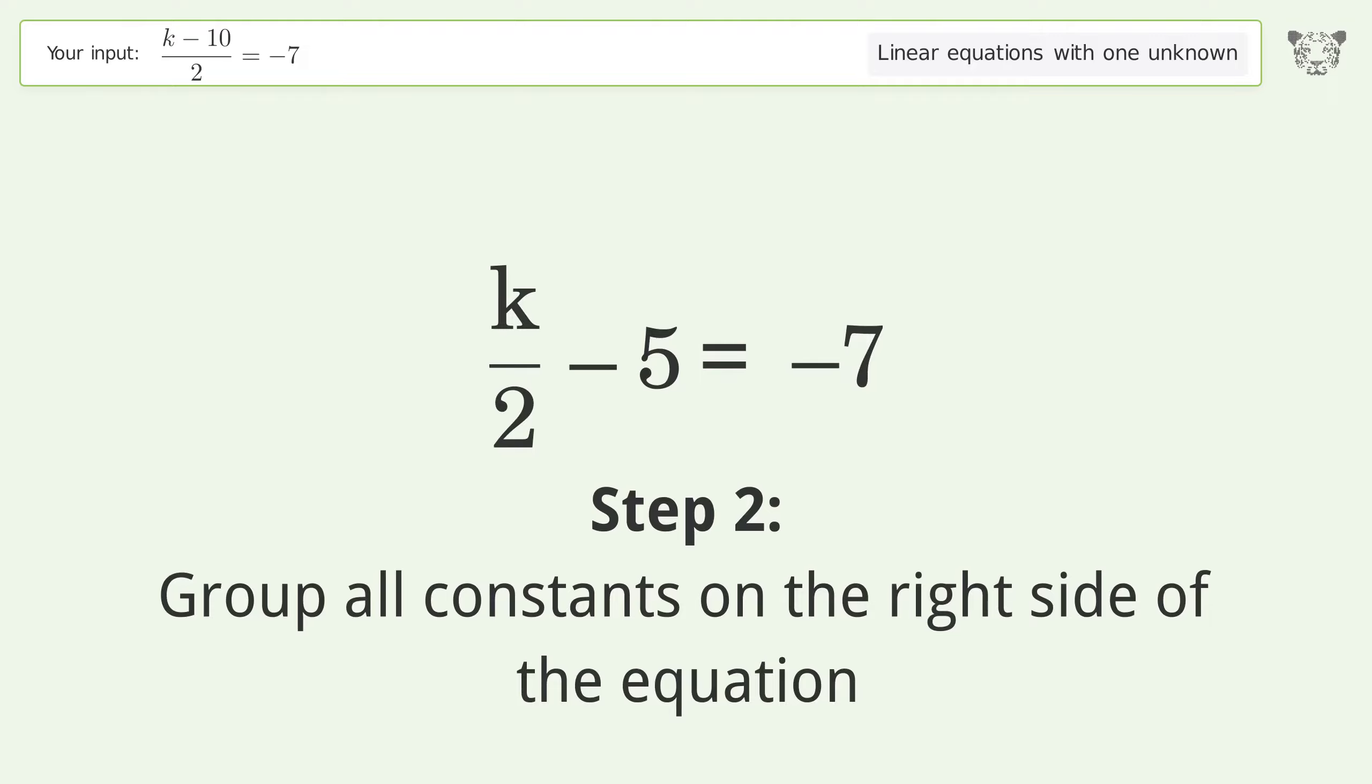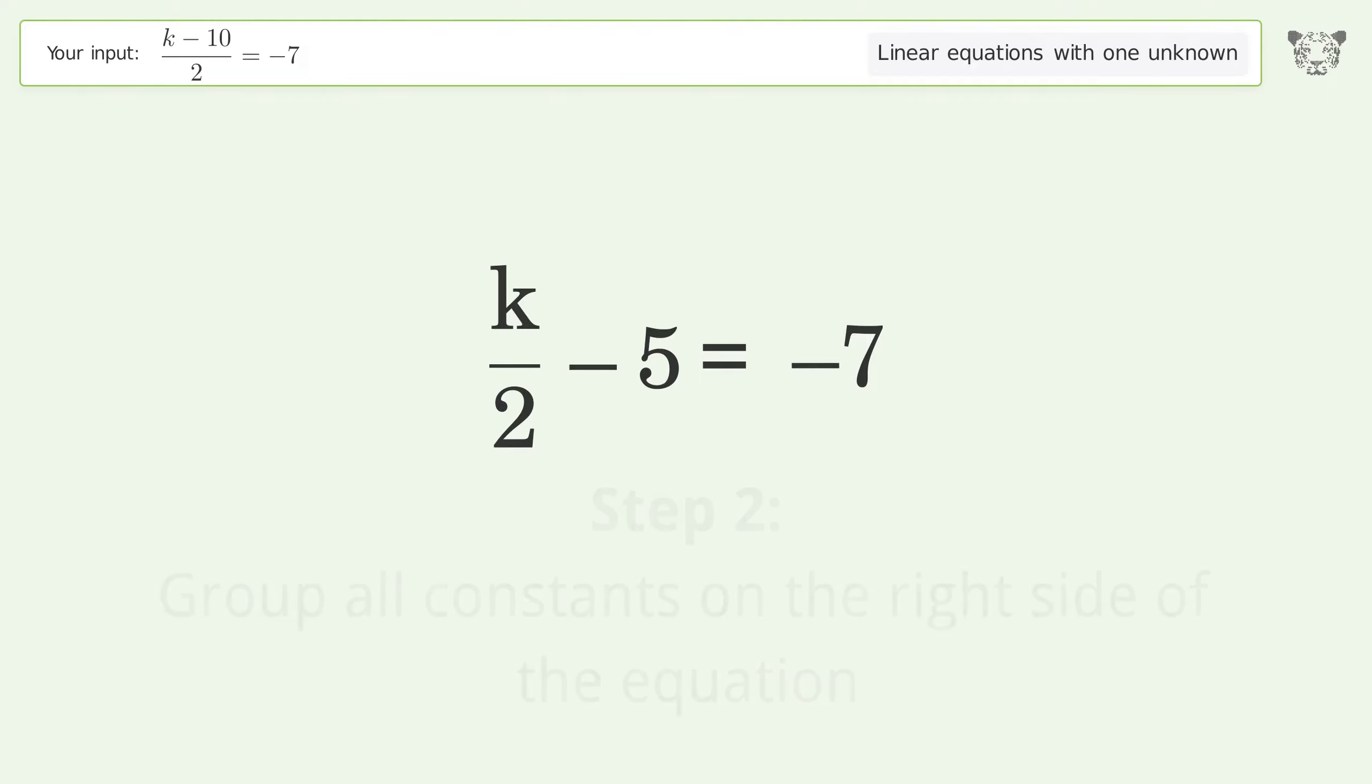Group all constants on the right side of the equation. Add 5 to both sides. Simplify the arithmetic.